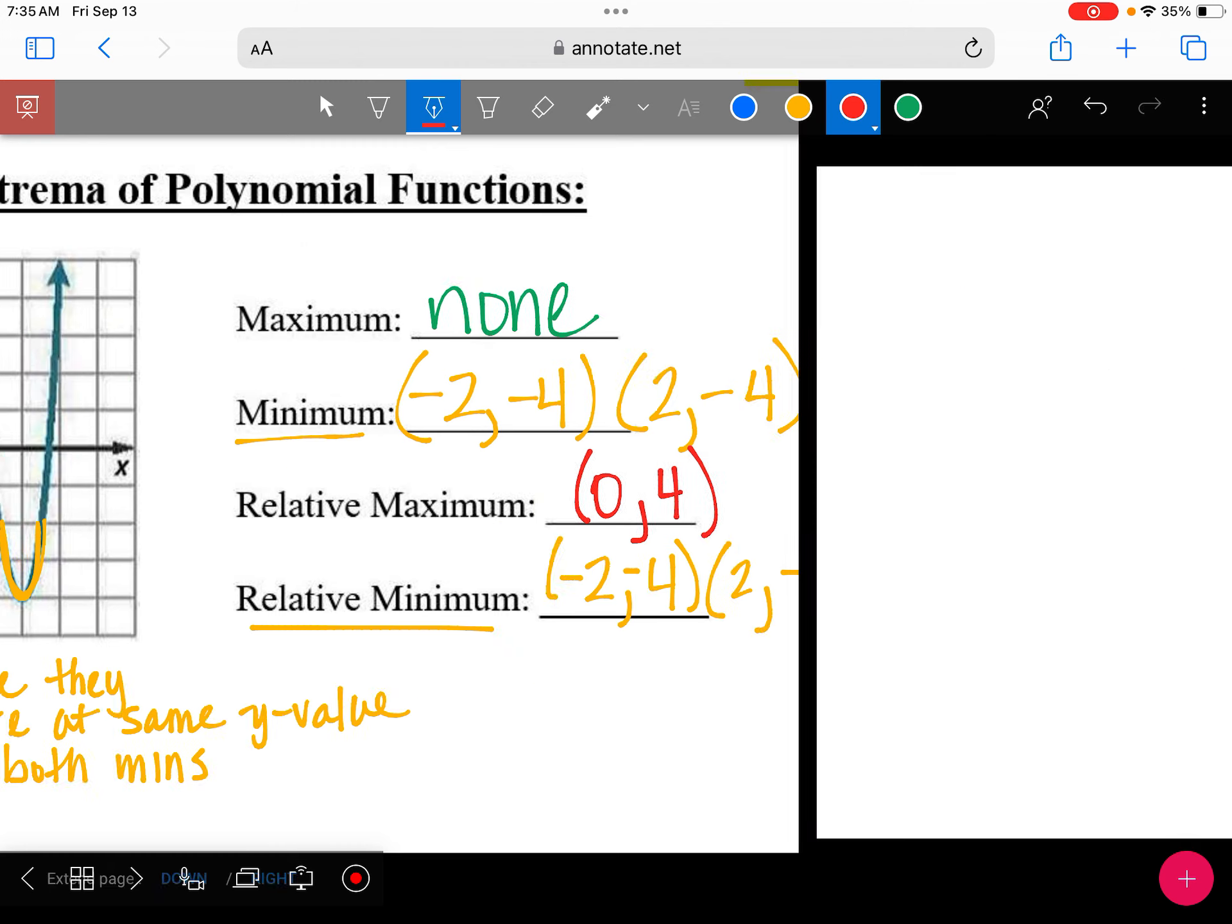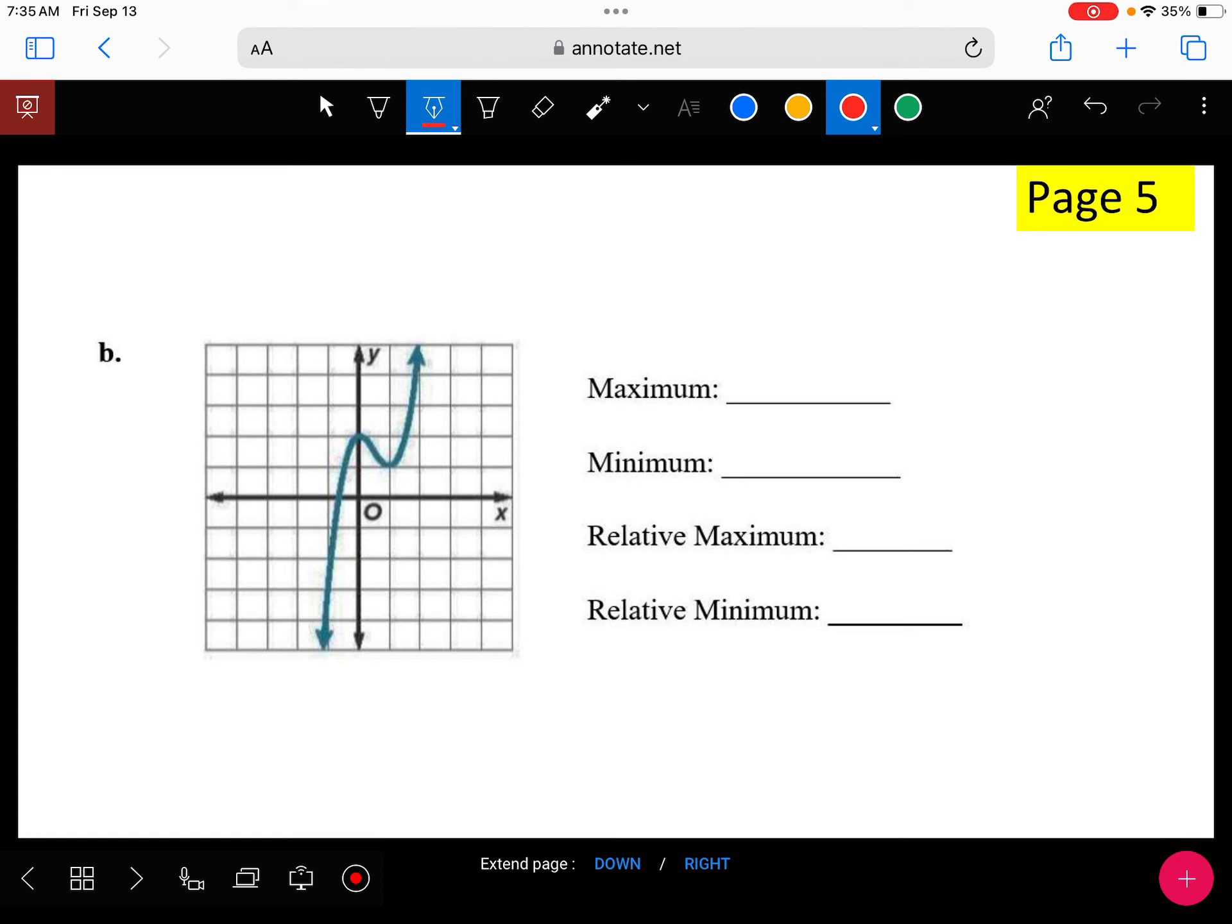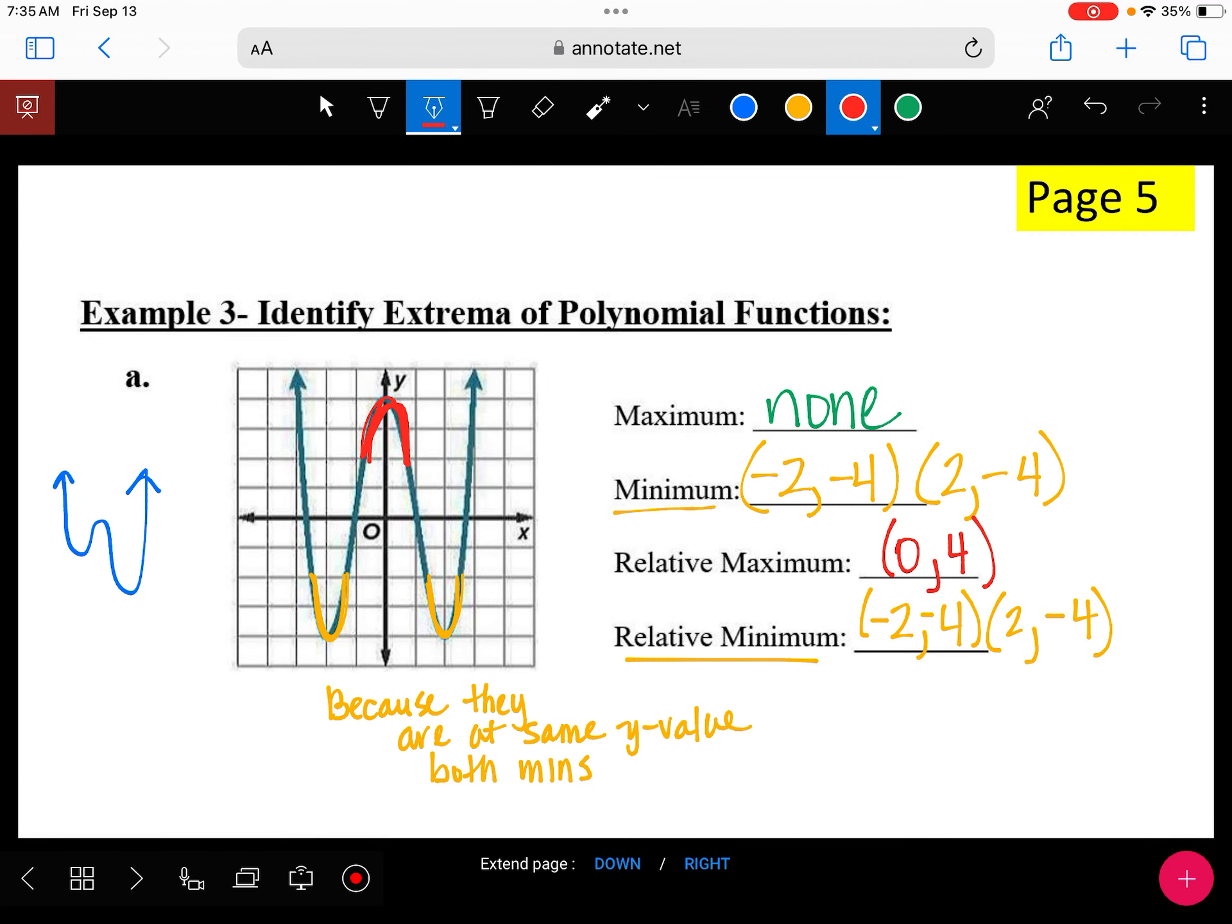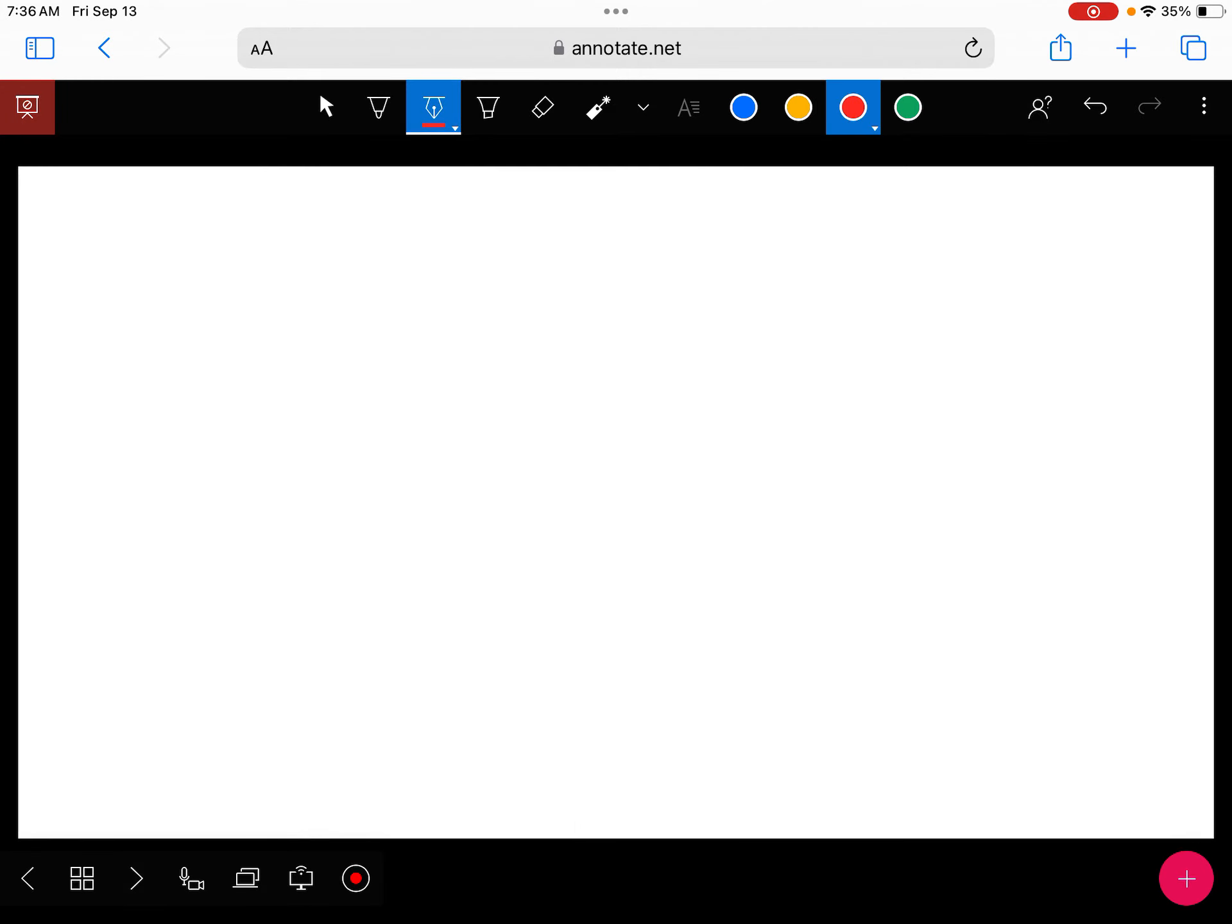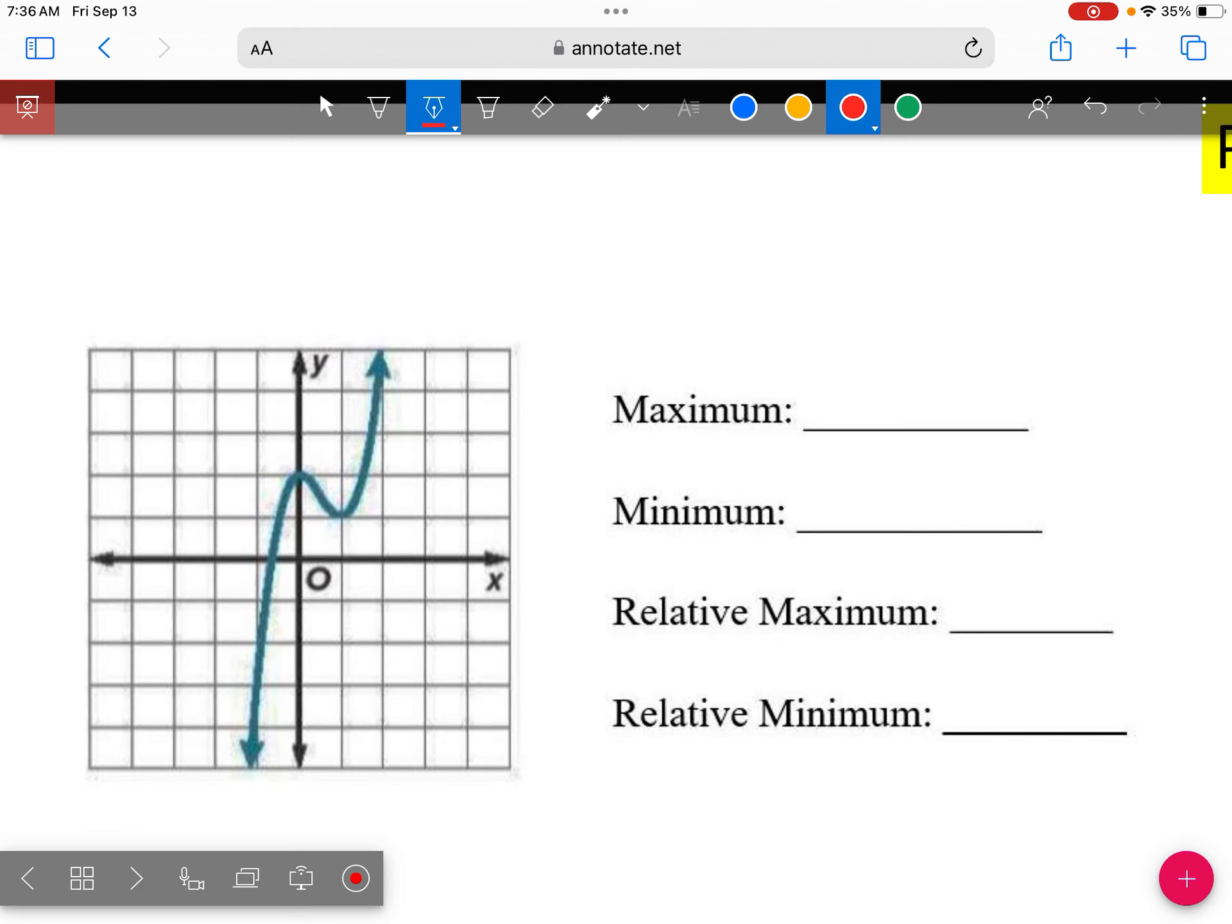All right. Let's look at the next graph. So this is an odd degree. So this one is an odd degree. So because it's odd, we don't have, there is no max and there is no min.